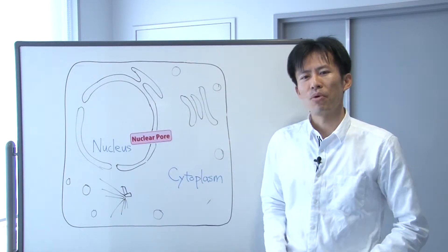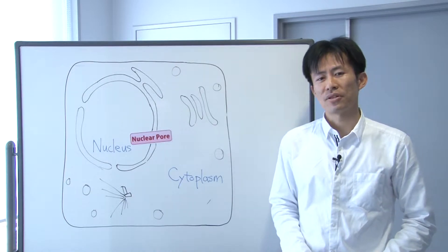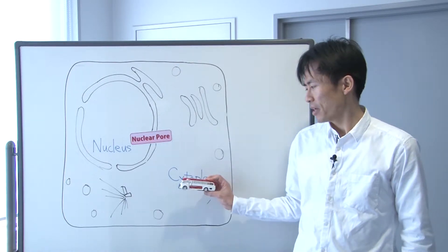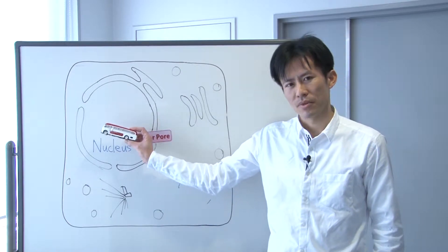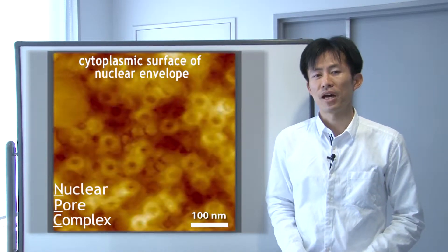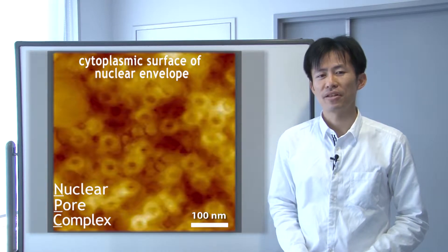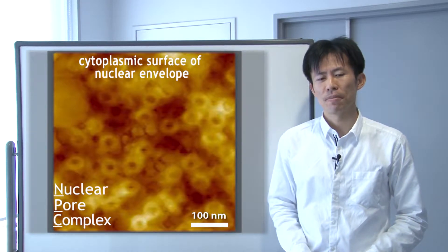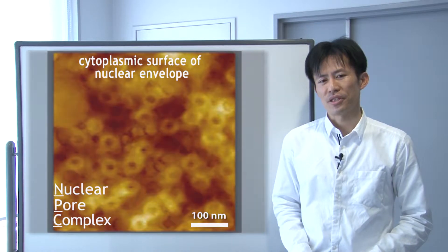The nuclear pore is a critical point of molecular traffic between the cytoplasm and nucleoplasm. The pore itself is not an empty channel, but rather a crowded barrier made of a number of protein subunits and prevents free diffusion of proteins.